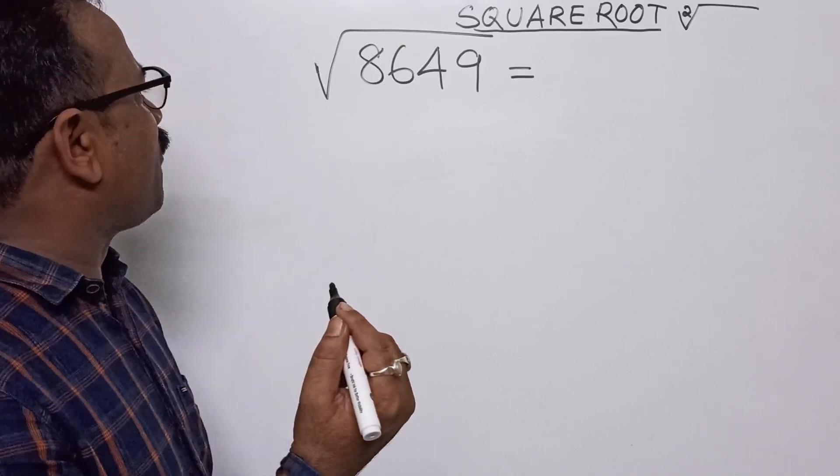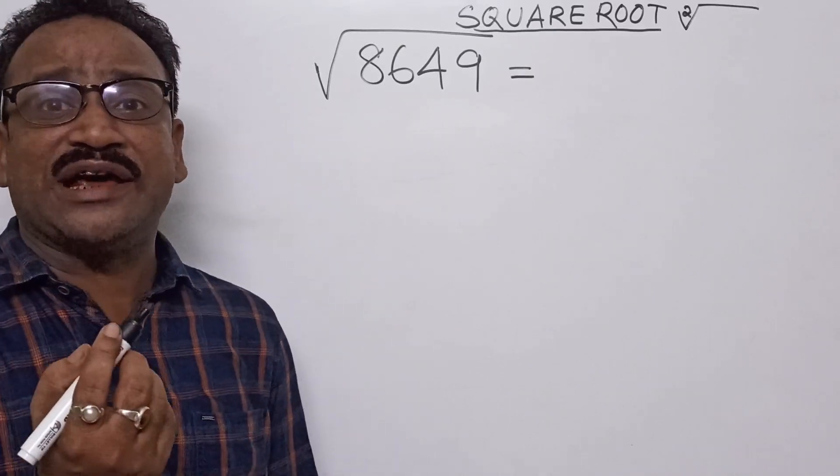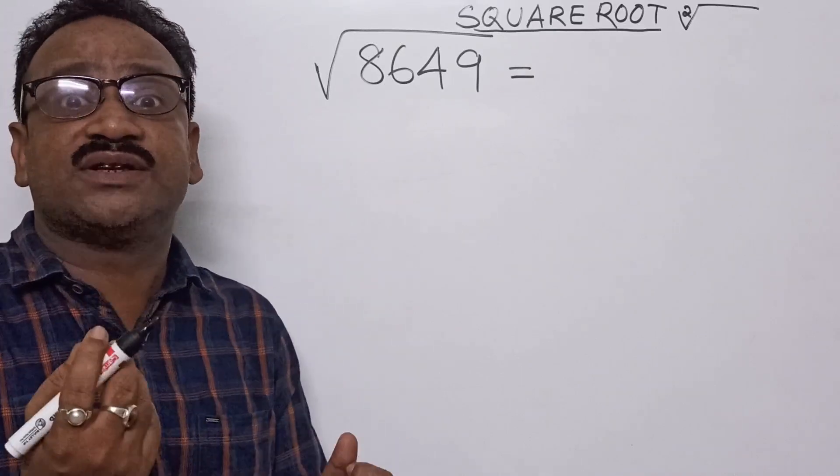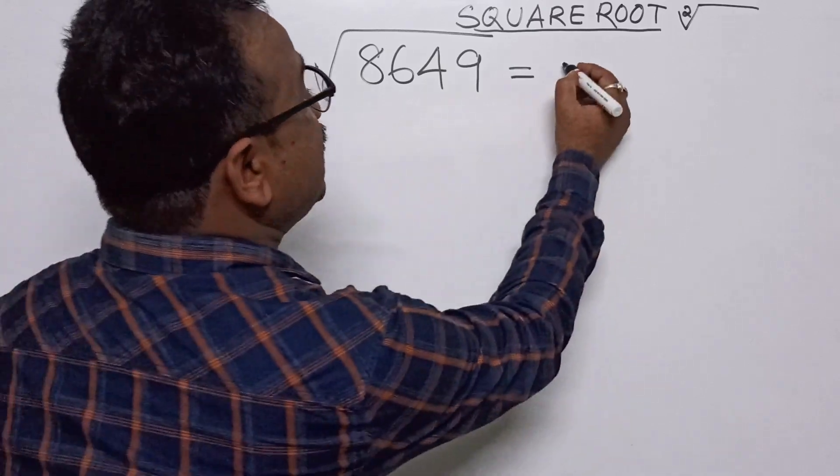Square root of 8649 - how much? That is 93.